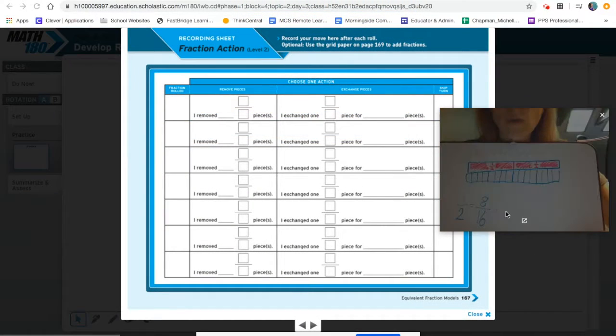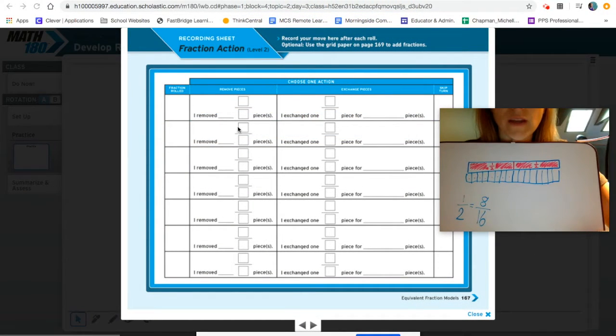So if I was going to record what I did in my video on my page here, I'm going to say that I rolled a one fourth, or I'm sorry, a one sixteenth. I'm going to grab my pen here. So I rolled one sixteenth. That's what I rolled on my turn. Sorry about my strange computer writing.